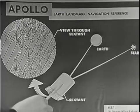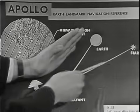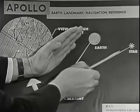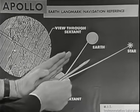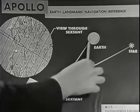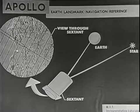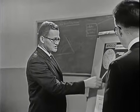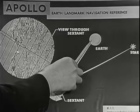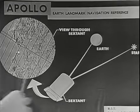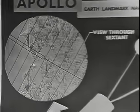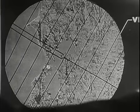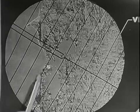The sextant shown here represents the spacecraft. To determine the position, an angle must be measured between a point on the Earth and a star. And you can see that as you move away from the Earth, this angle would narrow down, thus giving the distance between the Earth and the spacecraft. The astronaut first positions the spacecraft so that a point on the Earth, a landmark, is visible through the sextant. Then he positions the sextant angle so that the star is superimposed upon this landmark.